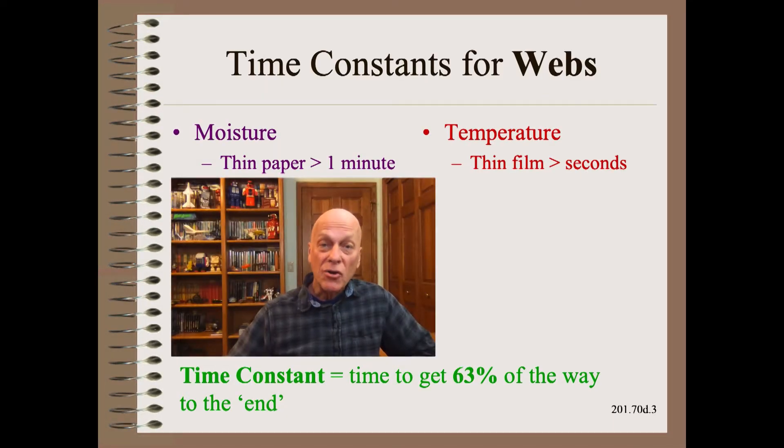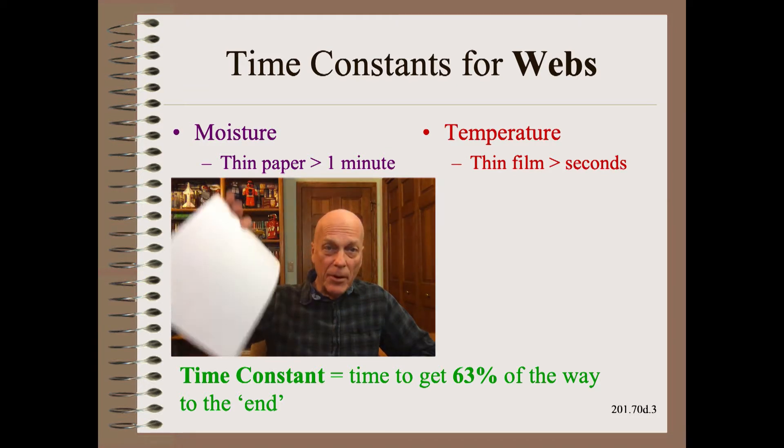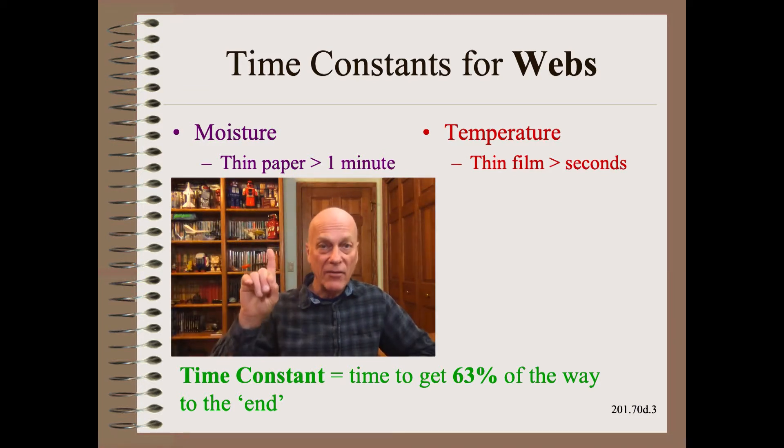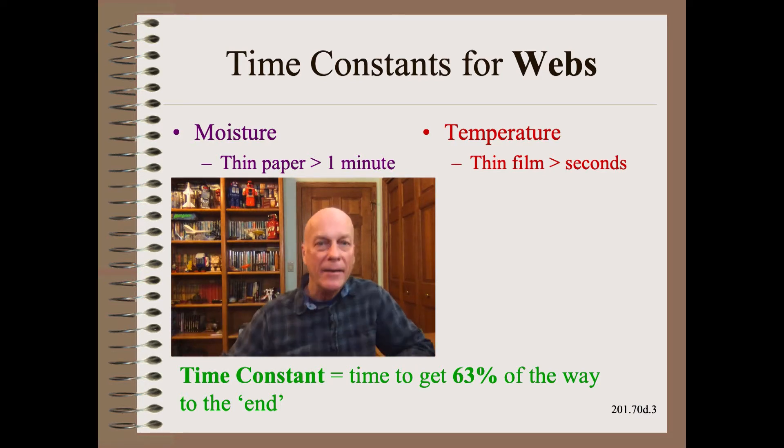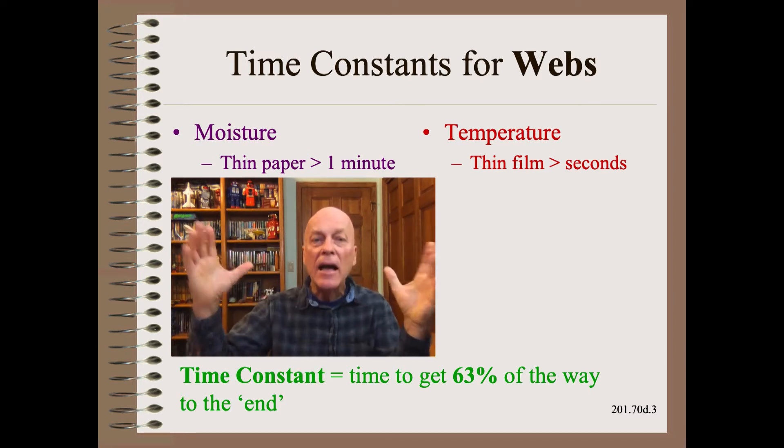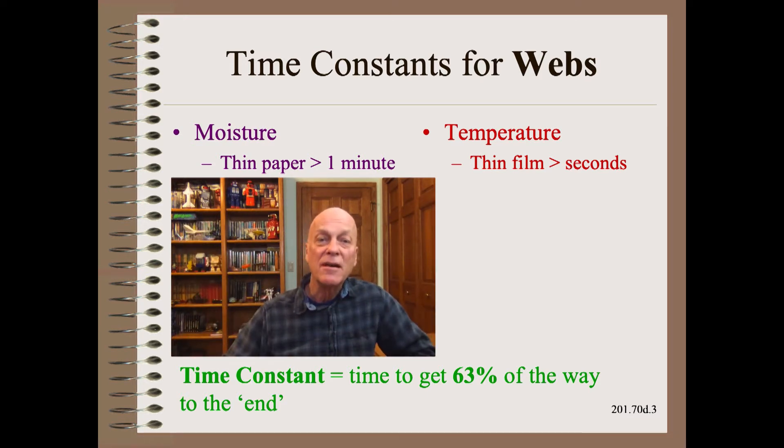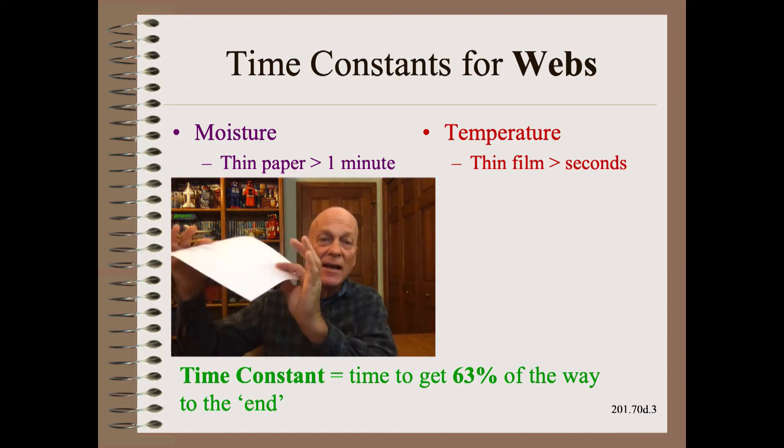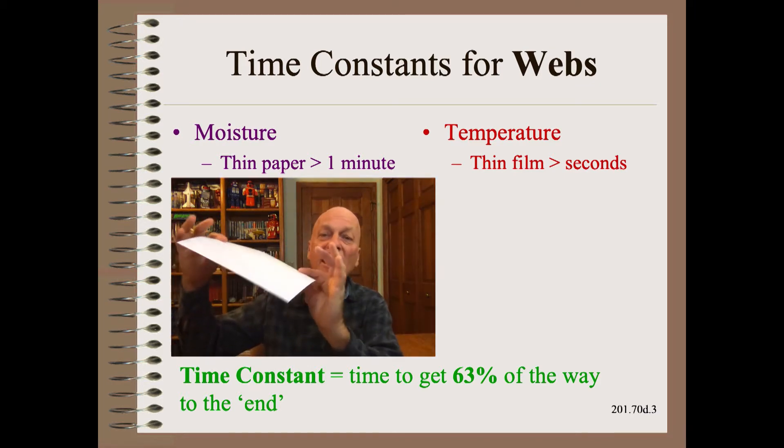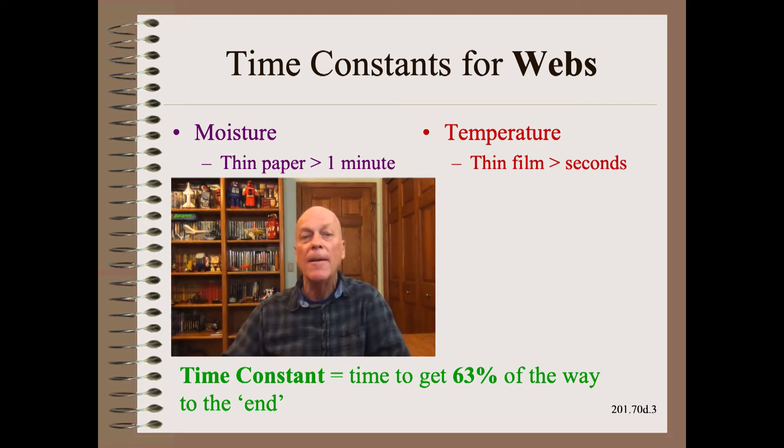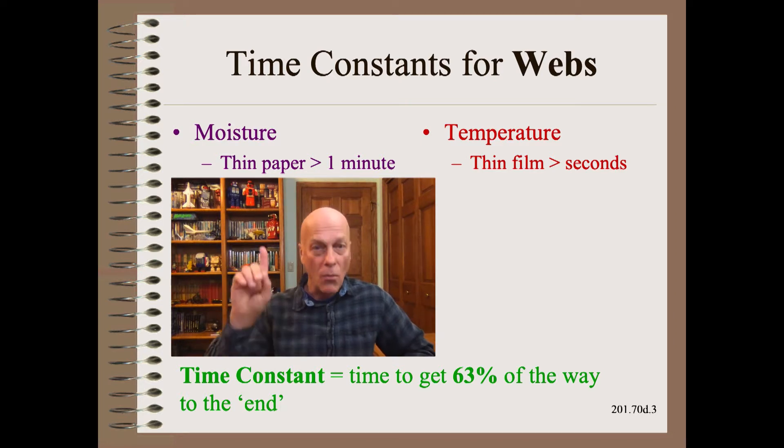If we are going to apply this idea to moisture on paper, we need one more bit of information. Perhaps surprisingly, it is not paper grade. Rather, it is how big the paper object is. Small things are quickest to equilibrate. Big things take longer. So the quickest time constant is for a thin, single sheet of paper exposed on both sides to air. The time constant for that sheet or web is about one minute.